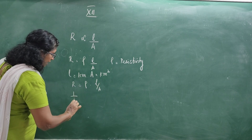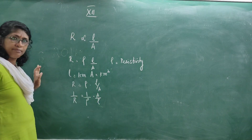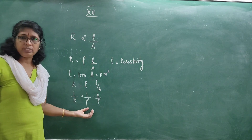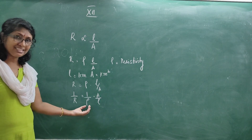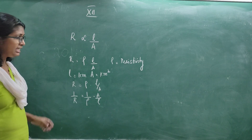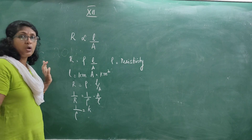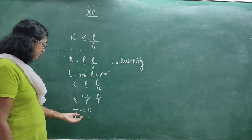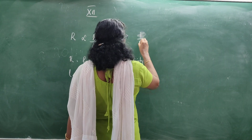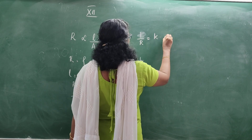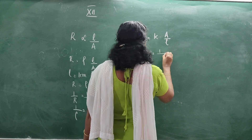Now what is 1/R? 1/R = (1/ρ) × (A/L). This 1/R is equal to conductance, and 1/ρ is the conductivity K, also called kappa. So conductivity K = (1/R) × (L/A).